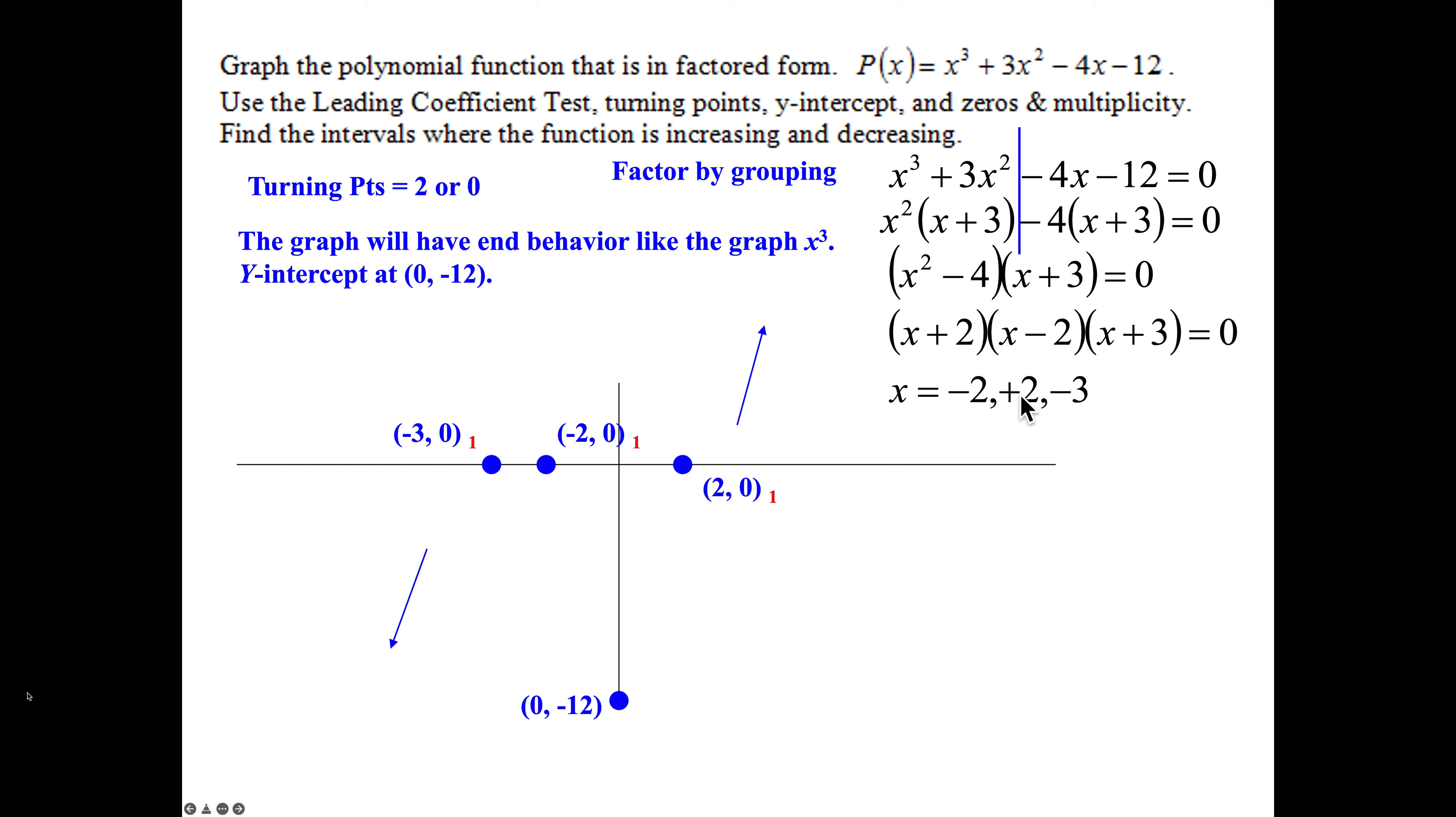So x equals negative 2, positive 2, and negative 3 all occur once. So we're definitely going to have two turning points because we have no multiplicity of 3 or more. So here's starting at the left, here's my left-hand behavior. It has to come up and go through this point, turn, come back down, head to the y-intercept, go through this point, come back up, and touch through that point. And there's my graph.